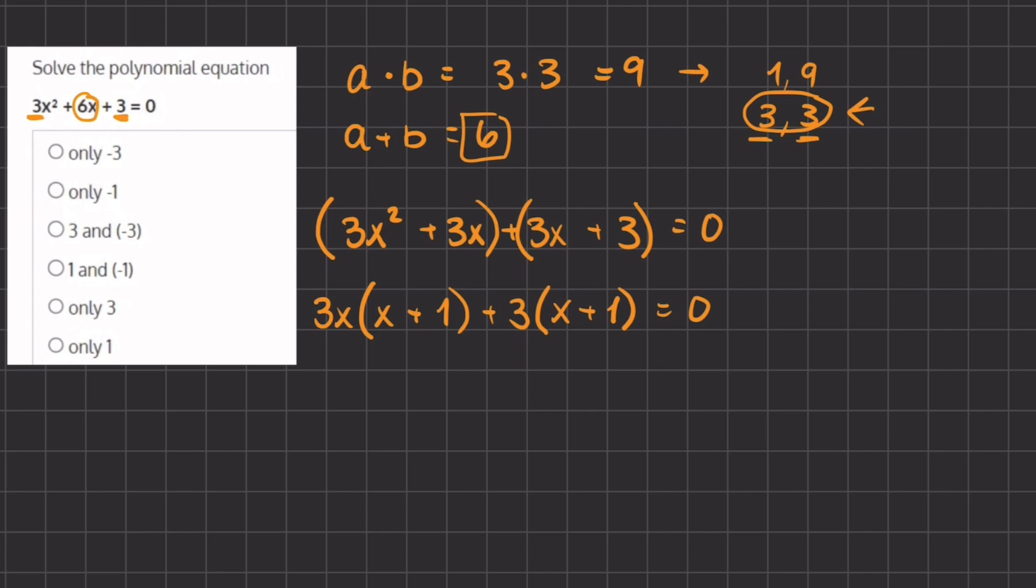Now when we factor out these two terms that we have inside of our parentheses we have x plus 1, and what we're left with is 3x plus 3. All this equals 0.